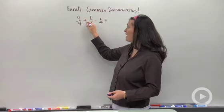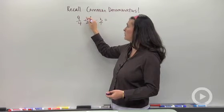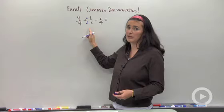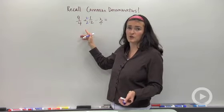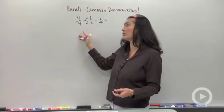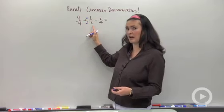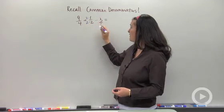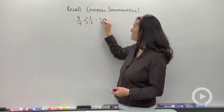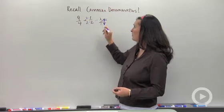In order for that to be a 4, it has to get multiplied by 2 over 2. I'm really just multiplying by 1 there, right? 2 over 2 is equal to the value of 1. I haven't changed the value of that 1 half. Same thing here. If I want that to be a 4 in the denominator, I'm going to have to multiply that guy by 4 over 4.